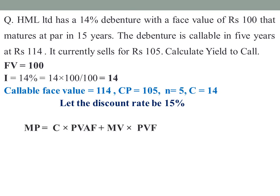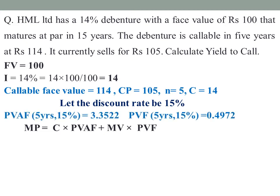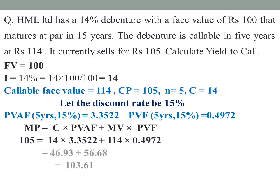The formula is: market price = coupon × present value annuity factor + face value × present value factor. Applying a 15% discount rate for 5 years: the present value annuity factor is 3.3522 and the present value factor is 0.4972. So: 105 = 14 × 3.3522 + 114 × 0.4972, which gives Rs. 103.61.